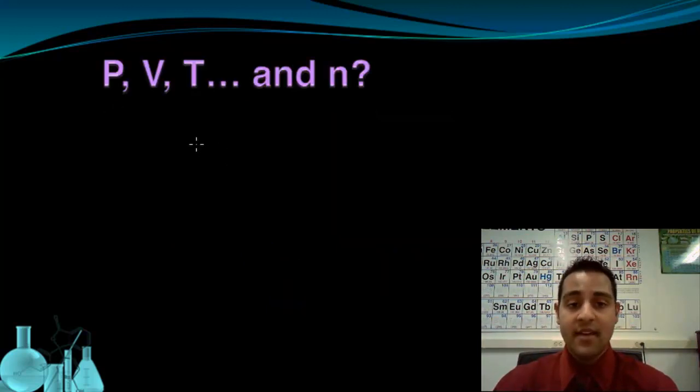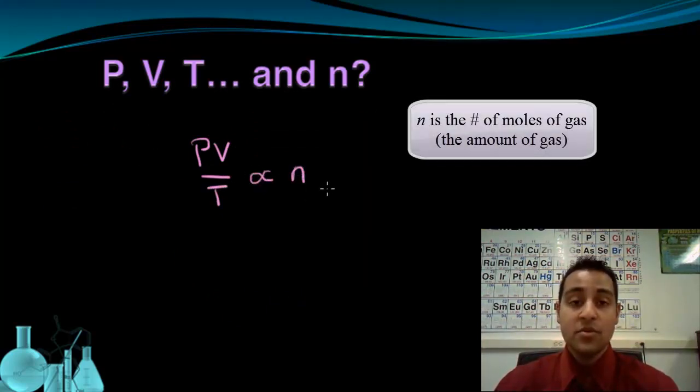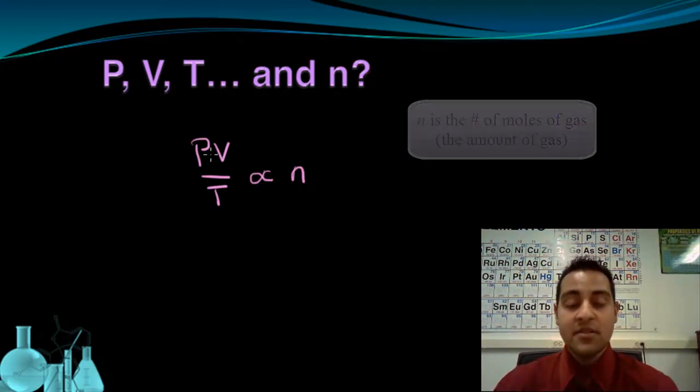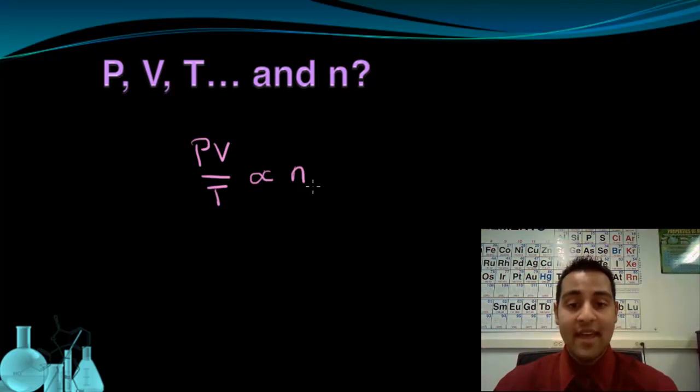Another way of saying that is that the ratio PV over T is proportional to n, the moles of gas present, which tells us the amount of gas that we have. Because this ratio of PV over T is proportional to n, we can show that with an equation. PV over T equals n, the number of moles, times some constant.